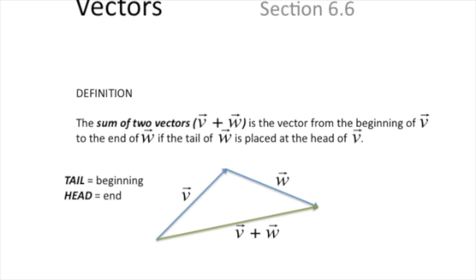Here's the deal about the sum of two vectors. The book defines it graphically. The sum of two vectors is what happens when you translate them such that the head of one is in the same place as the tail of the other — and then essentially you're talking about a shortcut. There's v and w; of course you could go that way, or you could just take the shortcut.